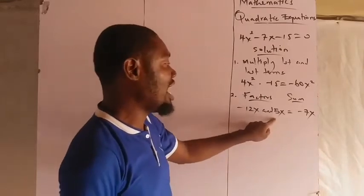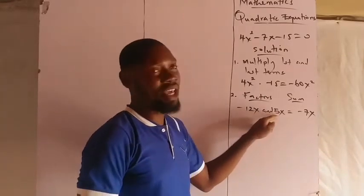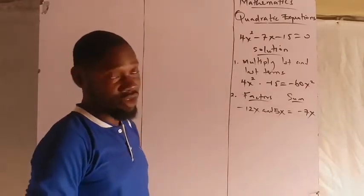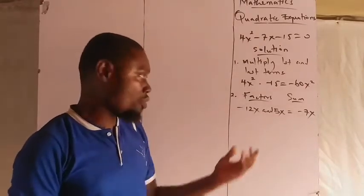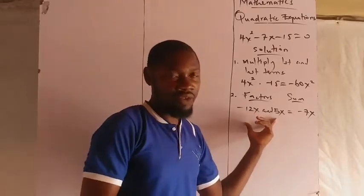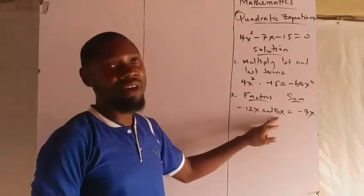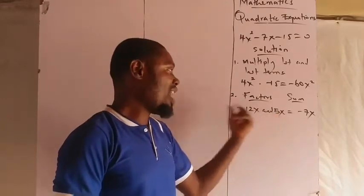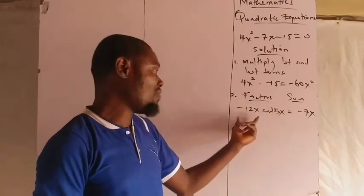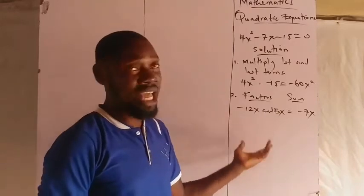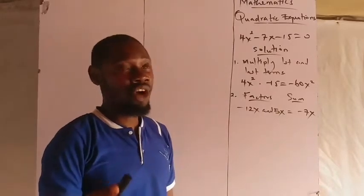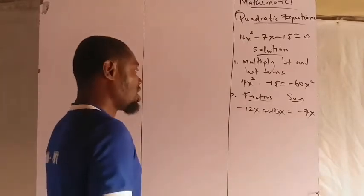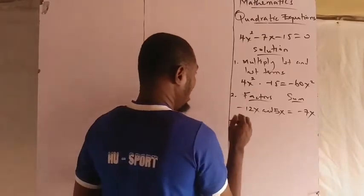-12x and 5x are the two factors of -60x², but if you add them up you have -7x. -12x times 5x is -60x², and if you add -12x plus 5x you will get -7x. If you give out 5x and you are supposed to receive 12x, you still have 7x to give to the person, and because the 7x is not yours, your answer is -7x. The next step: replace the middle value or the middle term by these two factors.